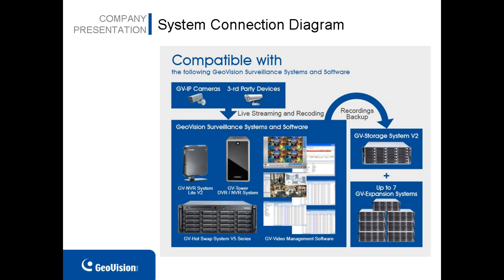Here is a very basic diagram showing you how hosts and GV Storage System v2 are connected to each other. First of all, you need to have your IP devices connect to GV surveillance software. It doesn't matter if it is GeoVision IP cameras or other third-party devices. And also through the iSCSI protocol, you can have your hosts assigned to record to GV Storage System v2. The Storage System v2 is equipped with 24 hard drives like we mentioned in the previous slide, and you can connect to 7 units of 24-bay GV expansion systems, which gives you a total of 192 hard drives.